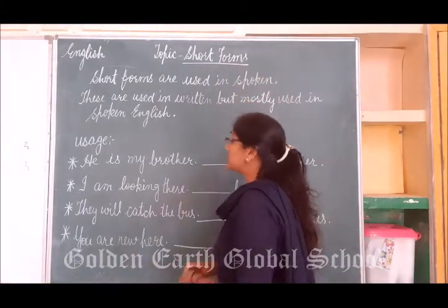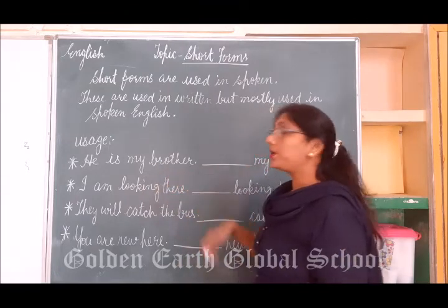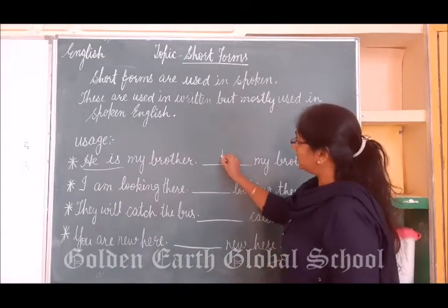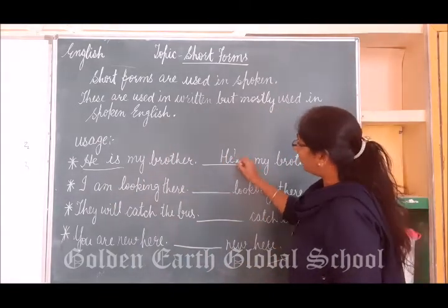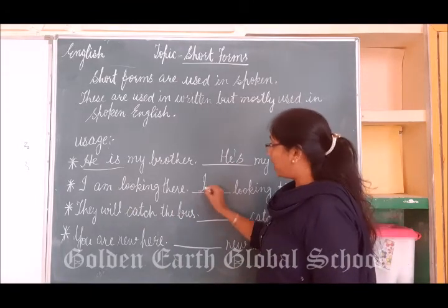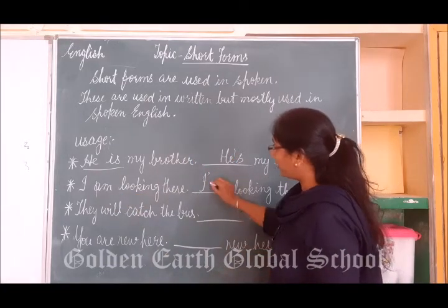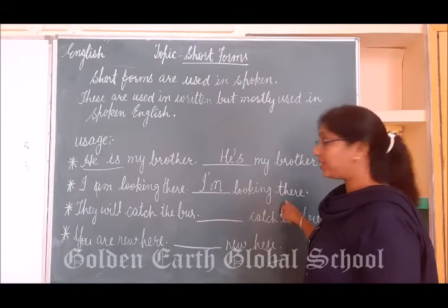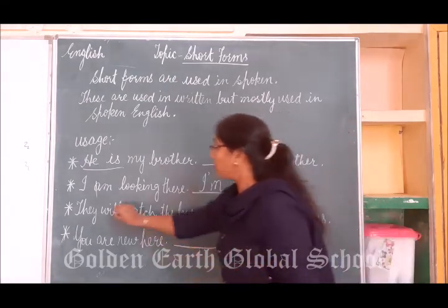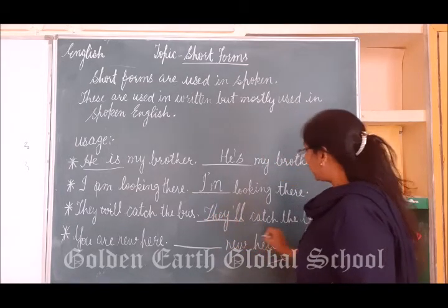Okay students, now see how we are going to convert the full form into short form. 'He is my brother' — how will we convert 'he is' into short form? 'He apostrophe s', so it becomes 'he's my brother'. 'I am looking there' — we drop the 'a', put an apostrophe, so it becomes 'I'm looking there'. 'They will catch the bus' — cut the first two letters, it becomes 'they'll catch the bus'.